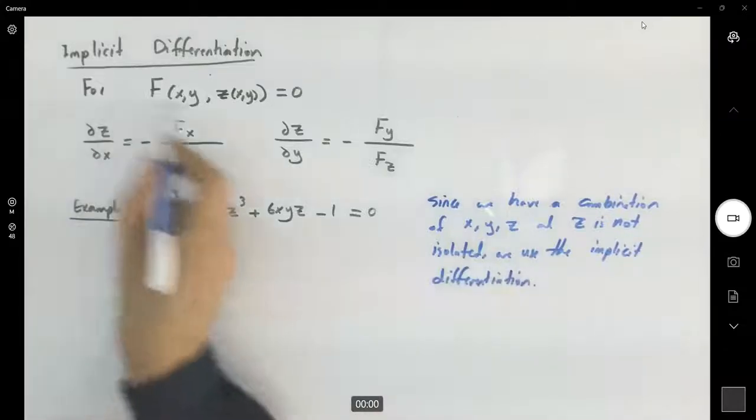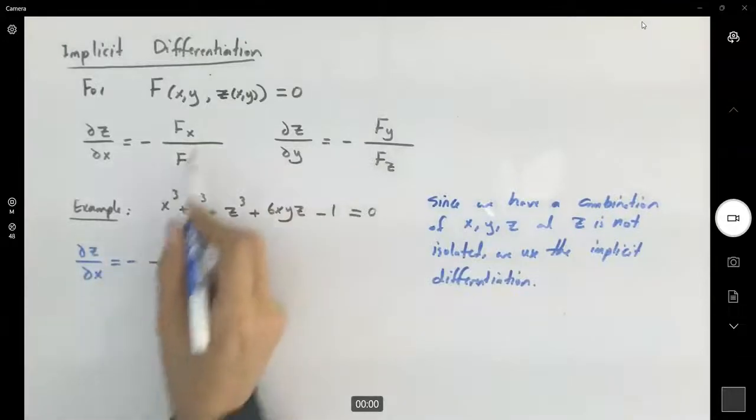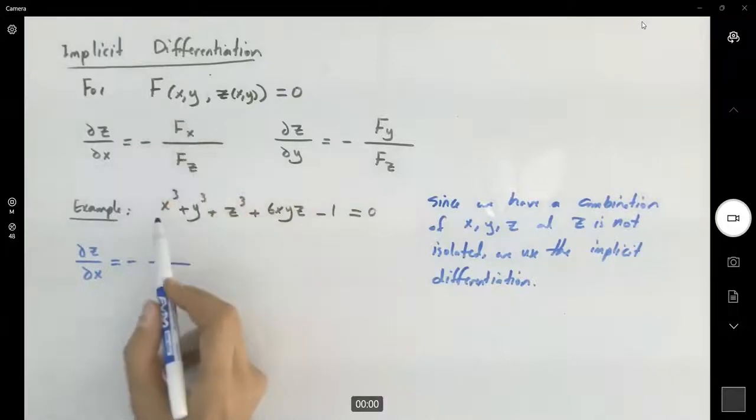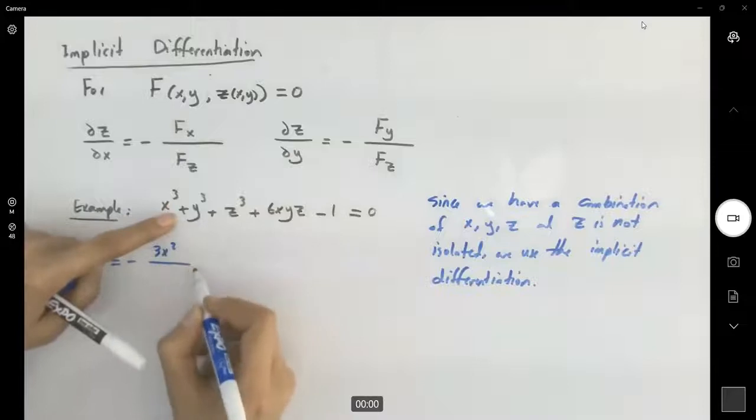Okay, we have some nice formulas. Let's just follow them. Partial derivative of z with respect to x is negative partial derivative of f with respect to x. The derivative of x cubed is 3x squared. This is just a constant, so it's going to be zero.